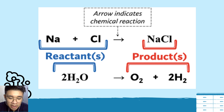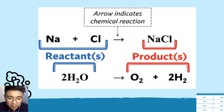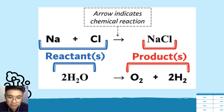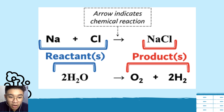For example, the large coefficient 2 times the subscript 2 gives 4 hydrogen atoms. The subscript represents how many of that element are in the compound — for H2, it's just hydrogen with no oxygen involved. So hydrogen count in reactants equals hydrogen count in products.